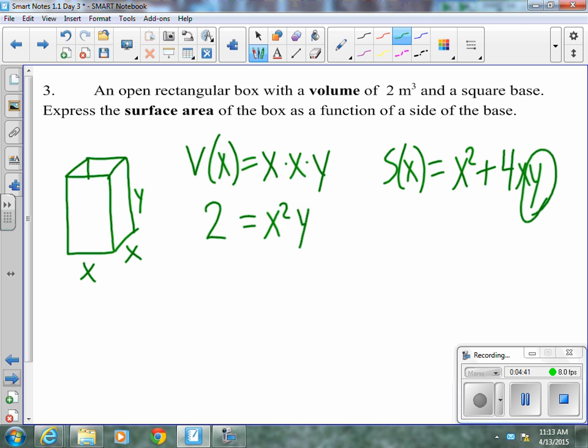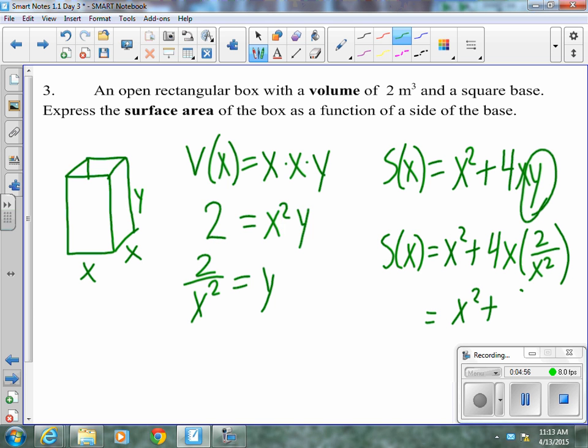So we need to replace this Y so that our surface area is in terms of X. So if I solve this for Y, Y is 2 over X squared, so that means our surface area in terms of X is X squared plus 4X times 2 over X squared. Or if we simplify a little bit, X squared plus 8 over X as our surface area in terms of X. And we're done because we wanted to express the surface area in terms of the length of the side, X.